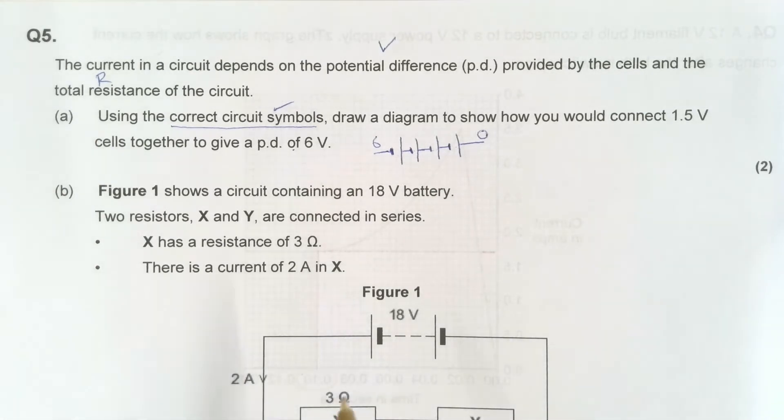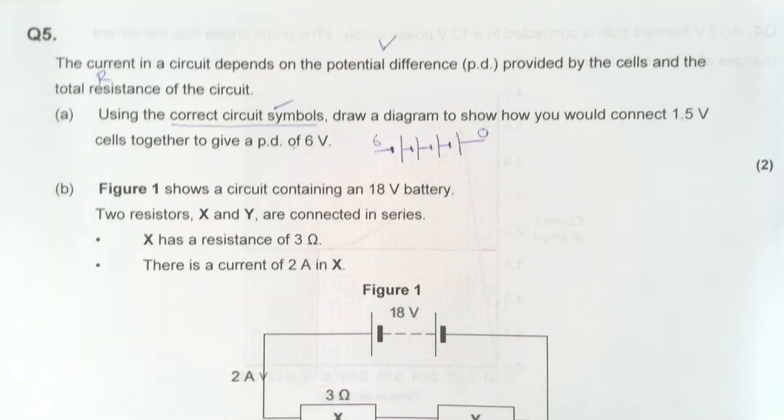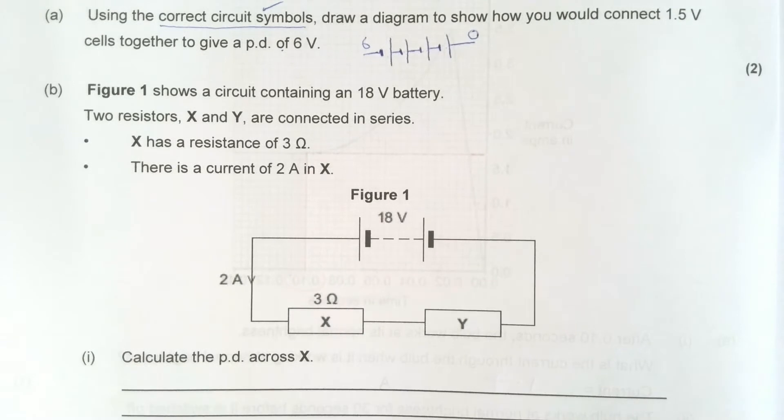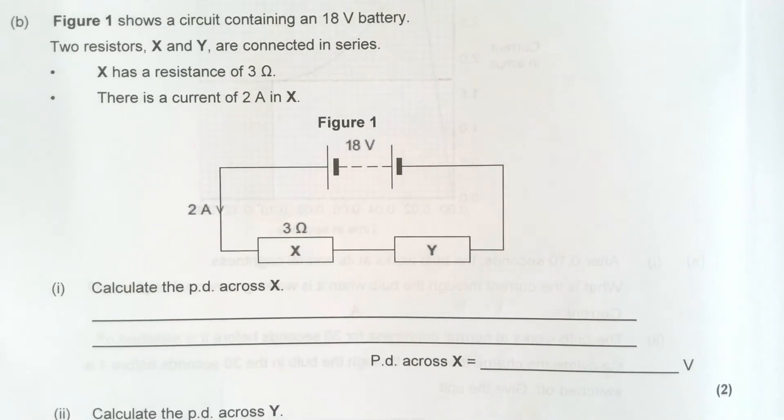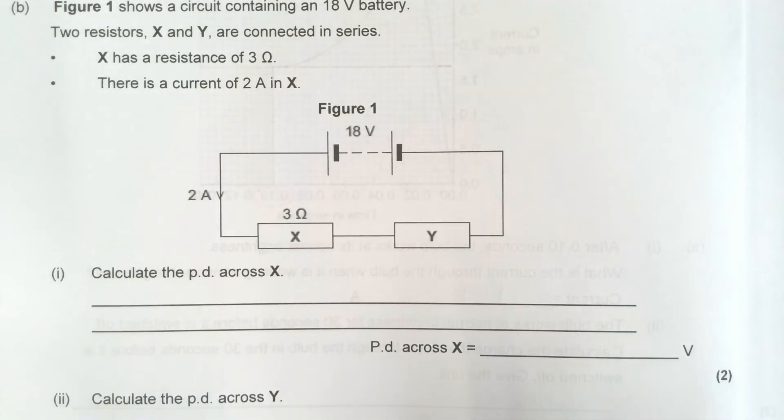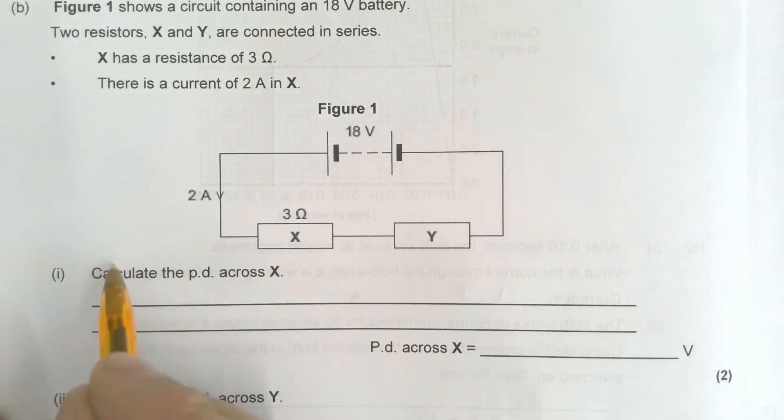Figure 1 shows a circuit containing an 18-volt battery. Two resistors, X and Y, are connected in series. X has a resistance of 3 ohms. There is a current of 2 amps in X. Calculate the PD across X. It's worth 2 marks. Okay, so it's a calculate question.